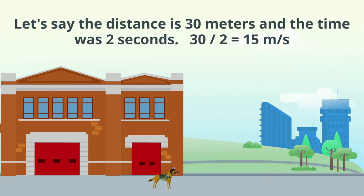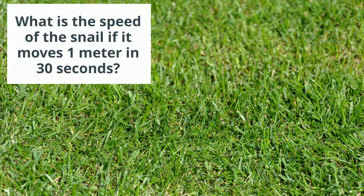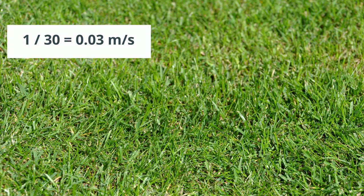Let's say the distance is 30 meters and the time was 2 seconds. 30 divided by 2 equals 15 meters per second. What is the speed of the snail if it moves 1 meter in 30 seconds? 1 divided by 30 equals 0.3 meters per second.